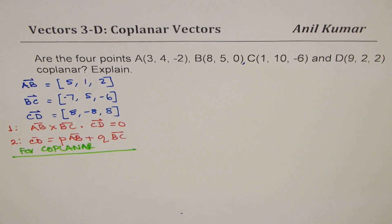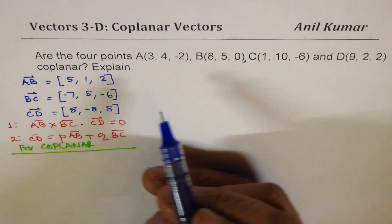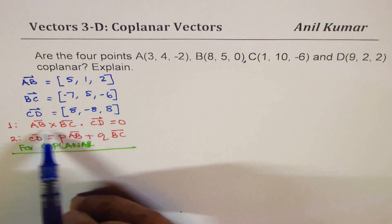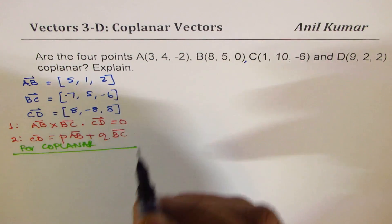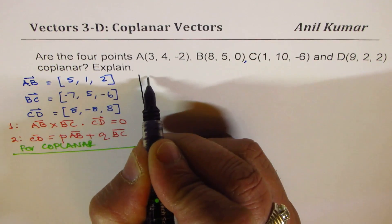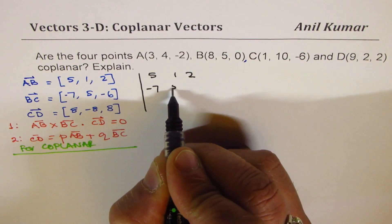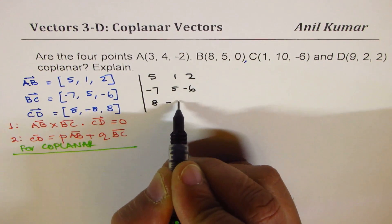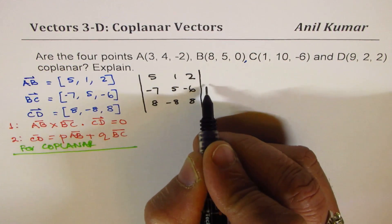We can do either one of them or both of them. So let's begin with the scalar triple product. I will write them in the form of a matrix and find the value. So we have 5, 1, 2 in the first row, -7, 5, -6 in the second row, and 8, -8, 8 in the third row. You could actually take 8 common and simplify, however I'll just do it straight.